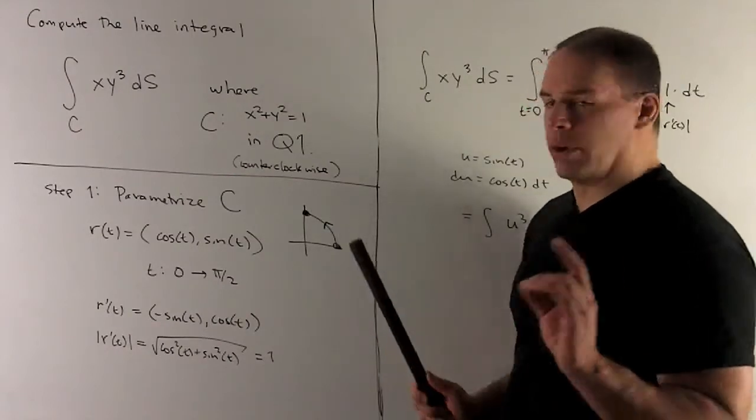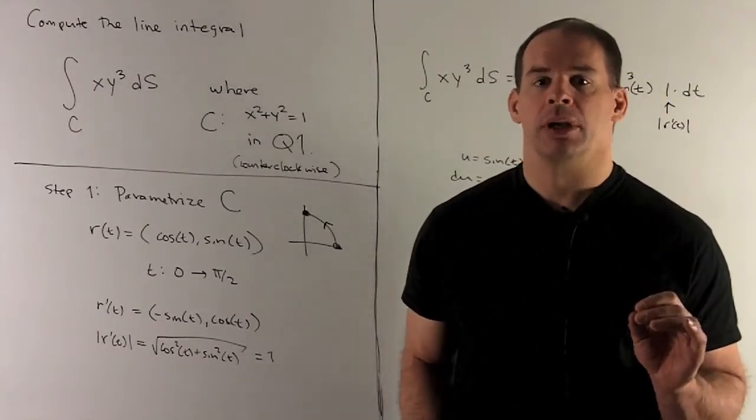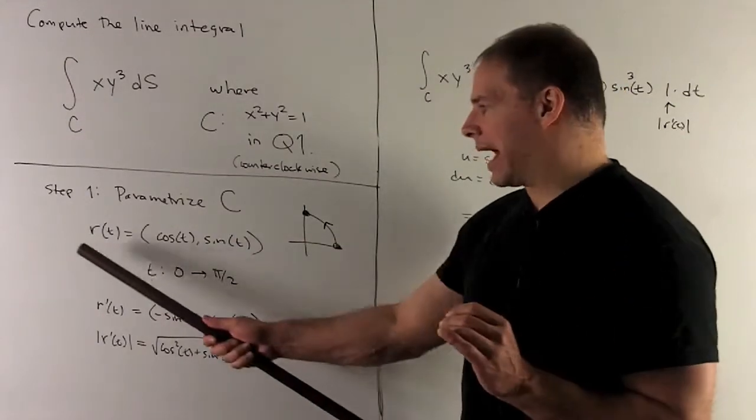Then we see connecting those points goes in the right direction, so our parameterization is going to be given by this vector function.